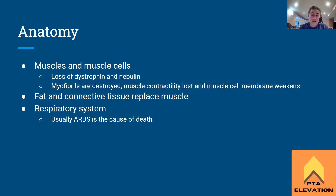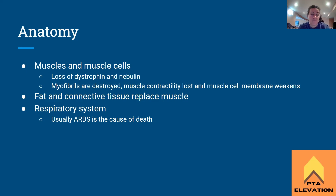It's also important to understand that the diaphragm is a skeletal muscle, so it is affected by Duchenne muscular dystrophy. Therefore this child is most likely going to pass away due to acute respiratory distress syndrome, because their diaphragm is no longer working. End-of-life care for this patient will include some sort of positive airway pressure or ventilation.